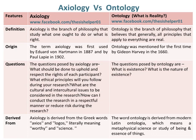Axiology is derived from the Greek words axios and logos, literally meaning worthy and science. Whereas, the word ontology is derived from modern Latin ontologia, which means a metaphysical science or study of being and essence of things.